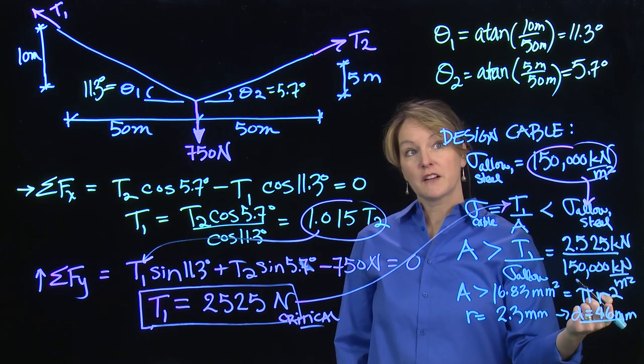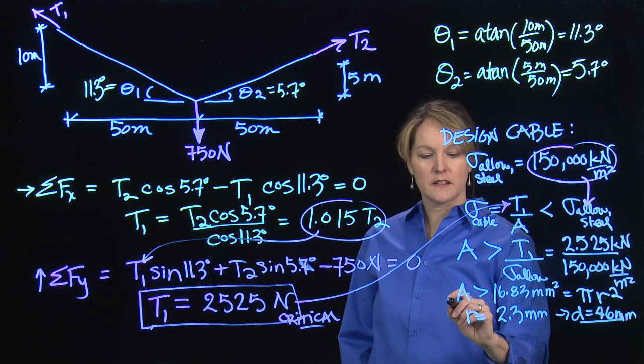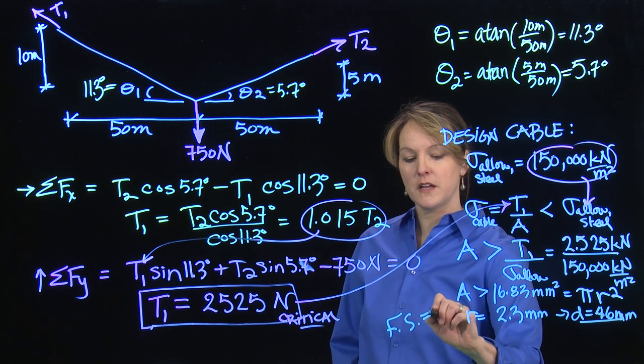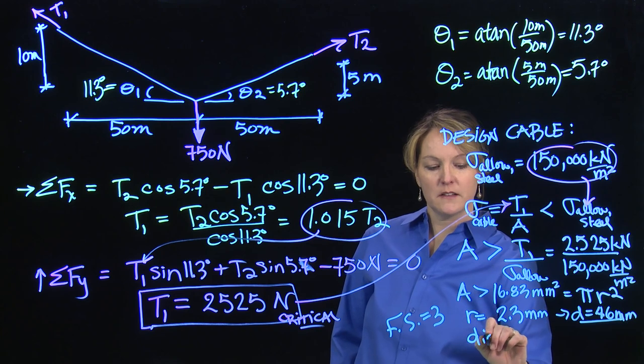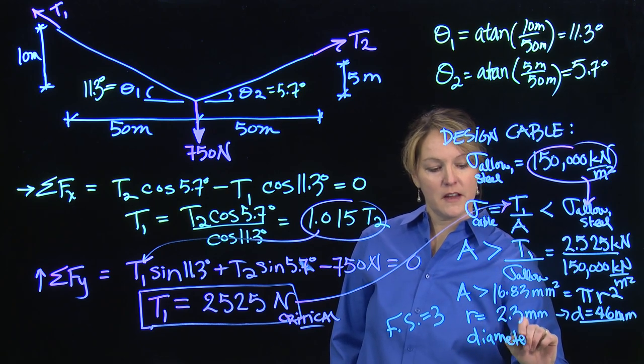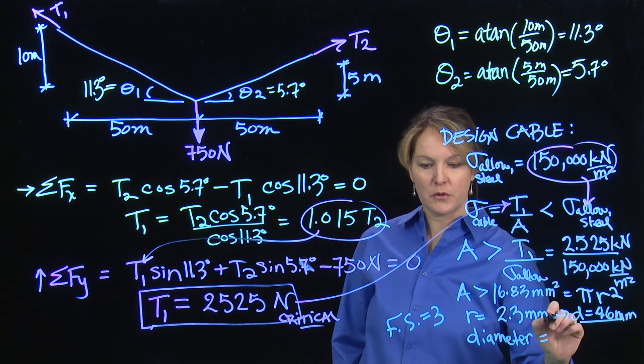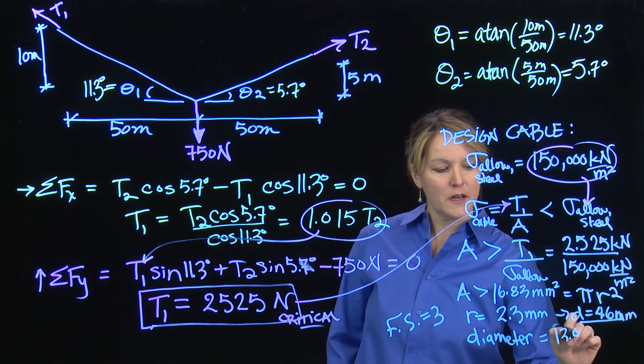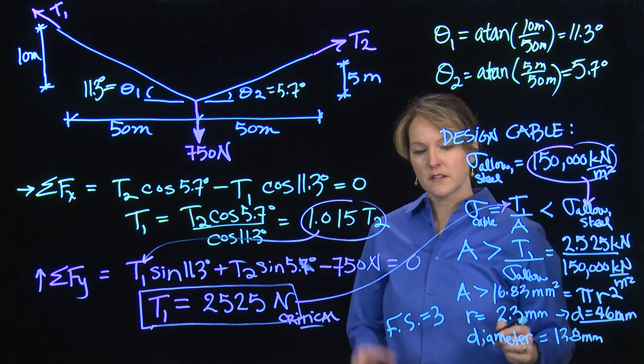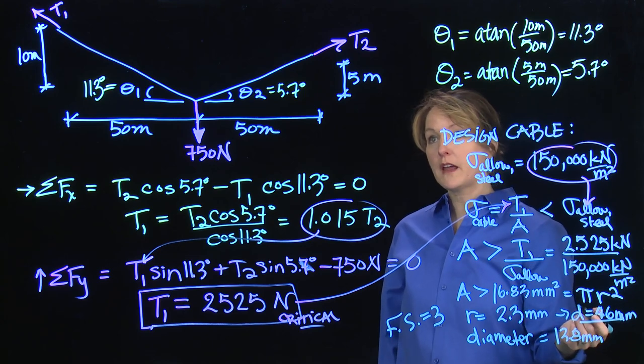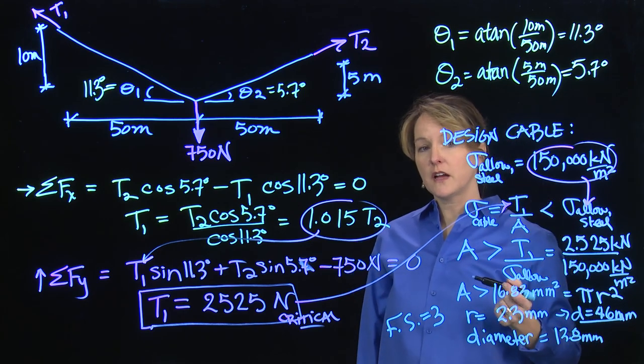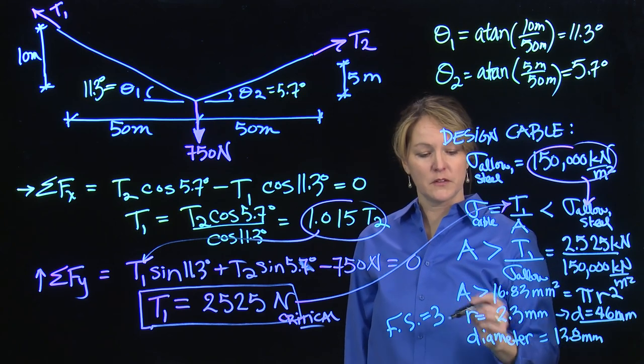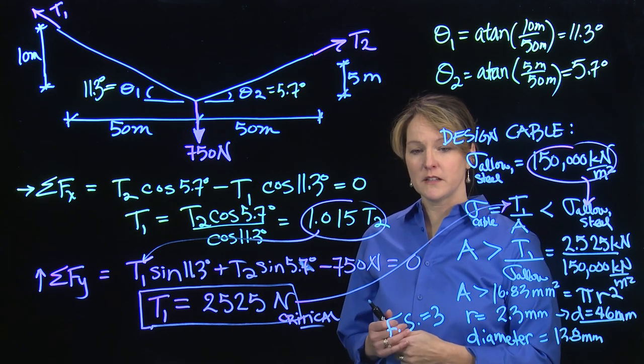I would probably put a factor of safety on this for zip lines. It's fairly common to use a factor of safety of 3, which means I would multiply this value by 3. And my design would be for a diameter that was 3 times 4.6 or 13.8 millimeters. That's a fairly big cable. If I wanted to reduce that cable, there's different things I could do. Probably the easiest would be to use a higher strength steel. But those are the different things an engineer would play around with in this design.